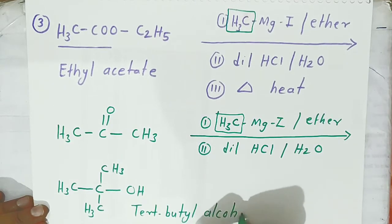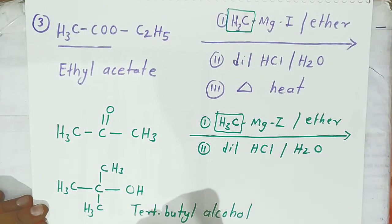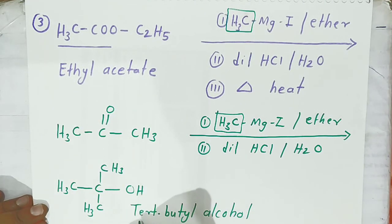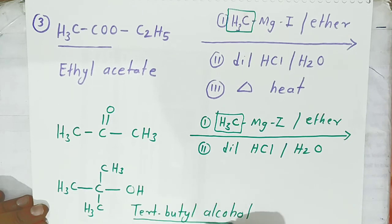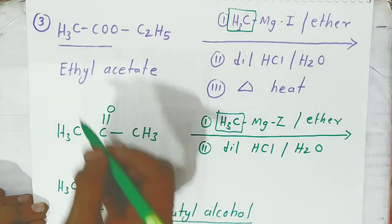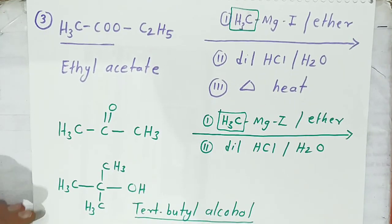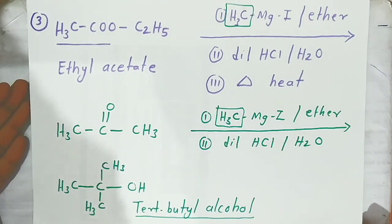So here students, we are getting tertiary butyl alcohol. If you want to prepare tertiary butyl alcohol from an ester, this is the way to do it. These are the conversions of ethyl acetate into tertiary butyl alcohol. Thank you very much students — if you like my video, please share it.